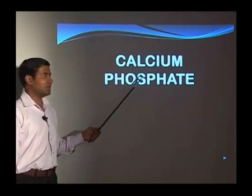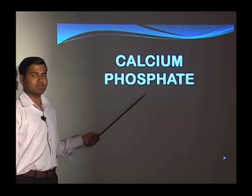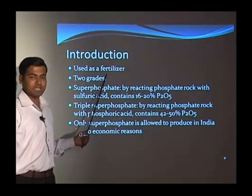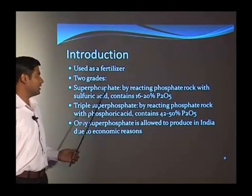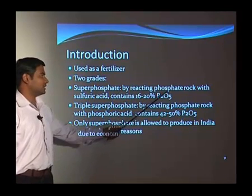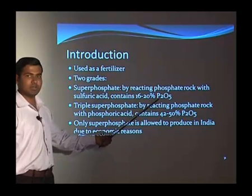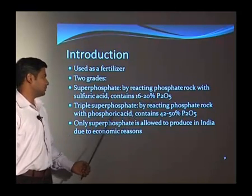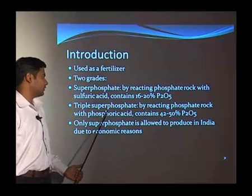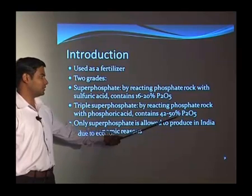The next part of phosphates is calcium phosphate, which is a major part of the fertilizer industry. It is used as a fertilizer; two grades are obtained: superphosphate, made by reacting phosphate rock with sulfuric acid, containing 16 to 20 percent phosphorous pentoxide; and triple superphosphate, made by reacting phosphate rock with phosphoric acid, containing 40 to 50 percent phosphorous pentoxide.